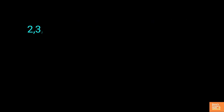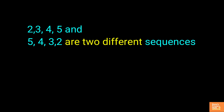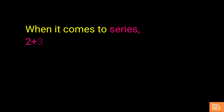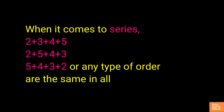For example, 2, 3, 4, 5 and 5, 4, 3, 2 are two different sequences. When it comes to series, 2 plus 3 plus 4 plus 5 and 5 plus 4 plus 3 plus 2, or any type of order, are the same in all cases.